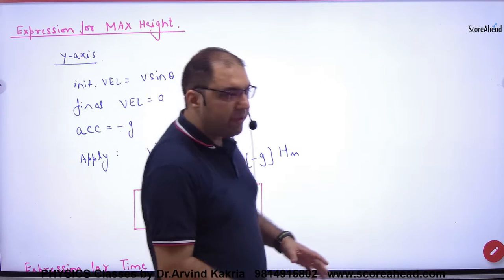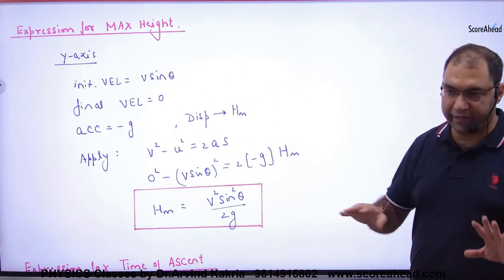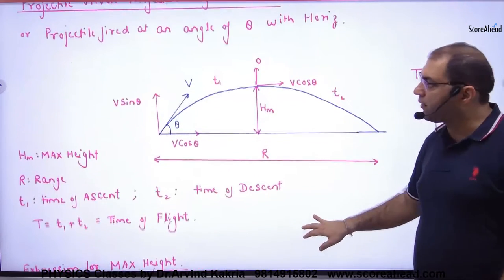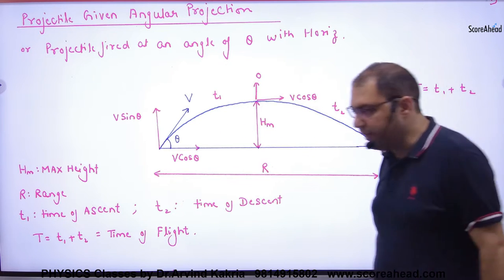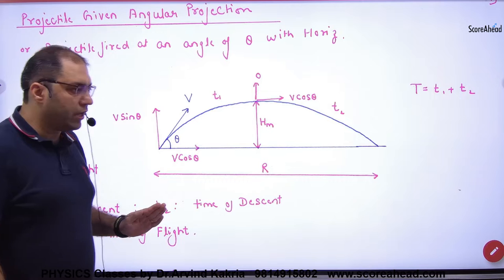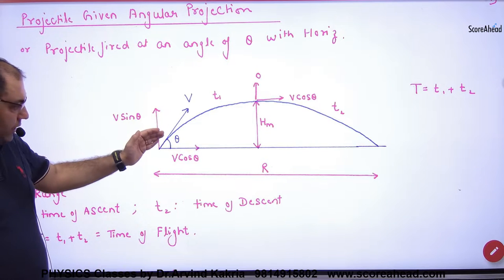Expression for maximum height covered in the projectile. When maximum height comes out, first you have to make this diagram. In this diagram, v is the velocity which projects the projectile at an angle of theta.